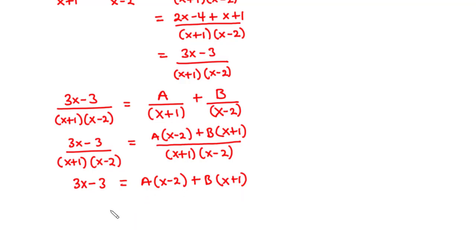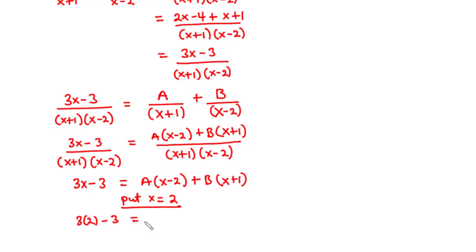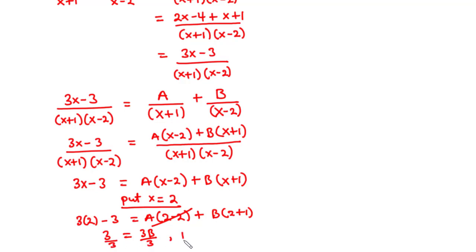To find the values of A and B, we substitute values of x that make one variable vanish. Put x equals 2 so that the A term goes to 0. Then 3 times 2 minus 3 equals a times 2 minus 2 plus b times 2 plus 1. 6 minus 3 is 3, and 2 plus 1 is 3, giving 3 equals 3b. So b equals 1.